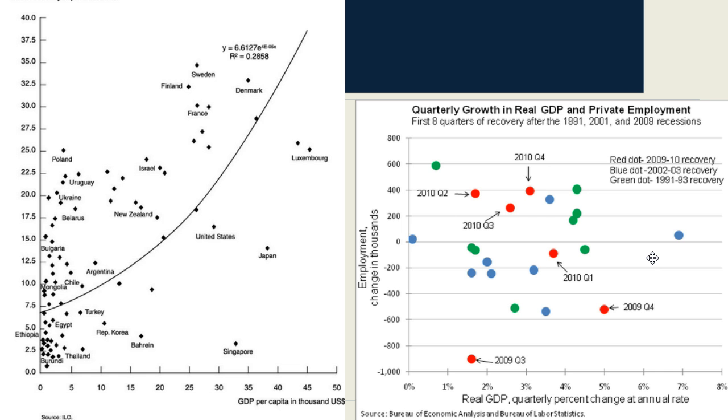On the right, we have a different version of a weak correlation. We've got quarterly growth in real GDP and private employment. If you look at this, you see that there is very little to no relationship between the amount of private employment and the real GDP.